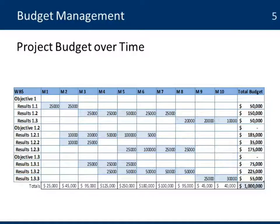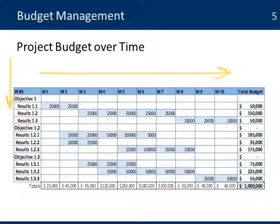One of the tools you can use to help manage your project is to make sure that you have a distribution of your budget over time. Like in this example, we have a list of all our activities in the project — in this case, we are looking at levels of results — and then we see the cost that you will have to incur on a monthly basis. In this example, we have a 10-month project at a value of $1,000,000. You identify all the costs you have every month, and that will be your baseline.